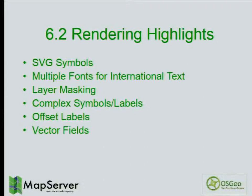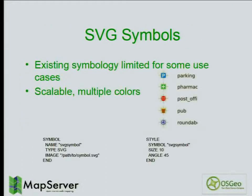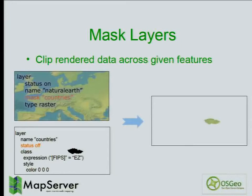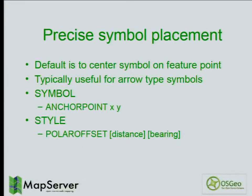The 6.2 release was really about rendering enhancements. First, we added support for SVG symbols — you can now use SVG vector symbols with multiple colors in your map file definitions, which is a great feature to have. We also added support for mask layers: you can use a vector layer as a mask on top of underlying layers, allowing you to filter the output produced by the software and control through the URL which parts of the map are hidden or visible.